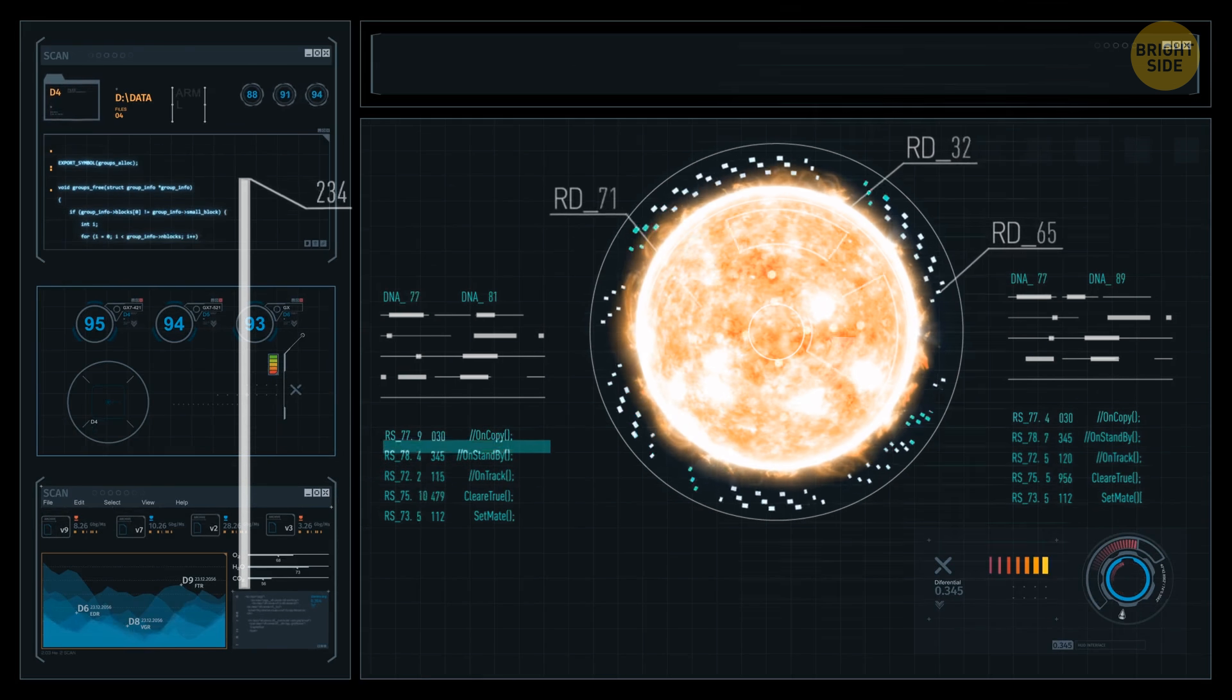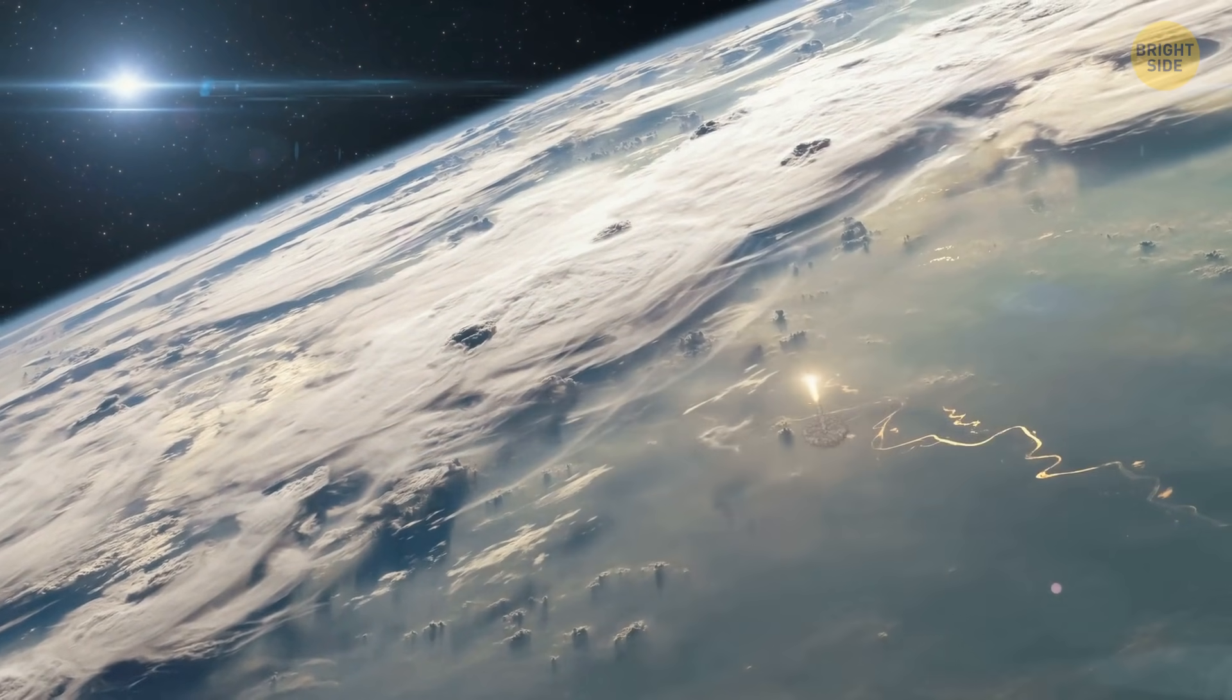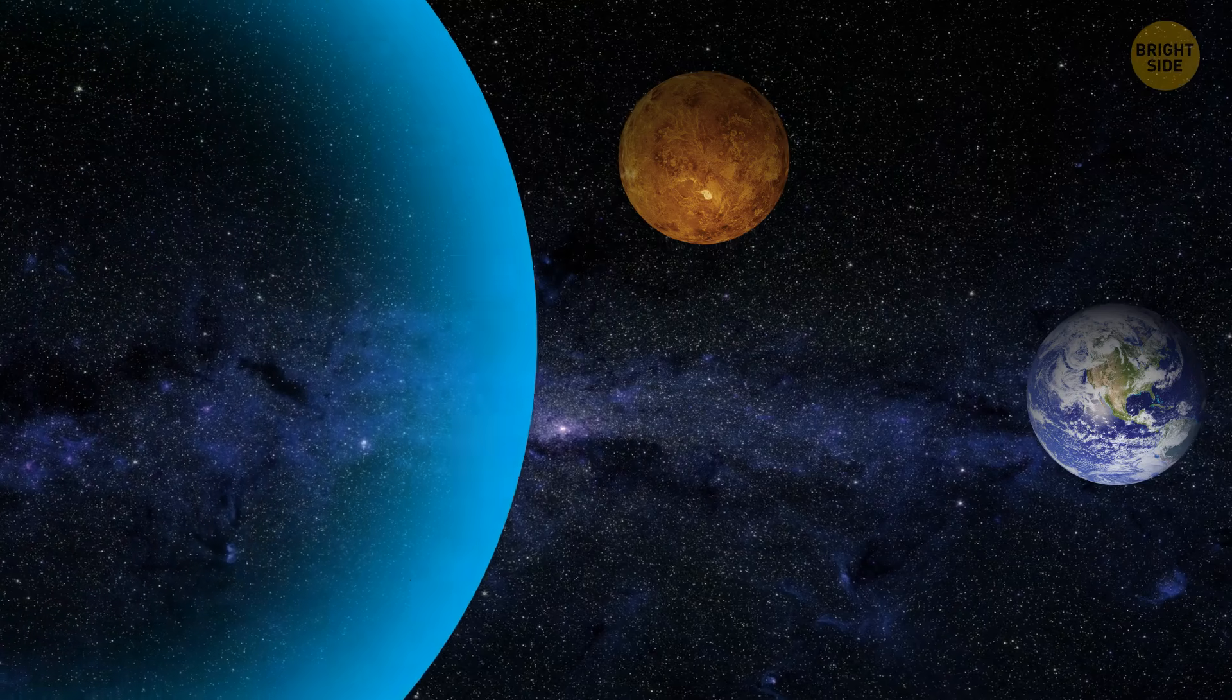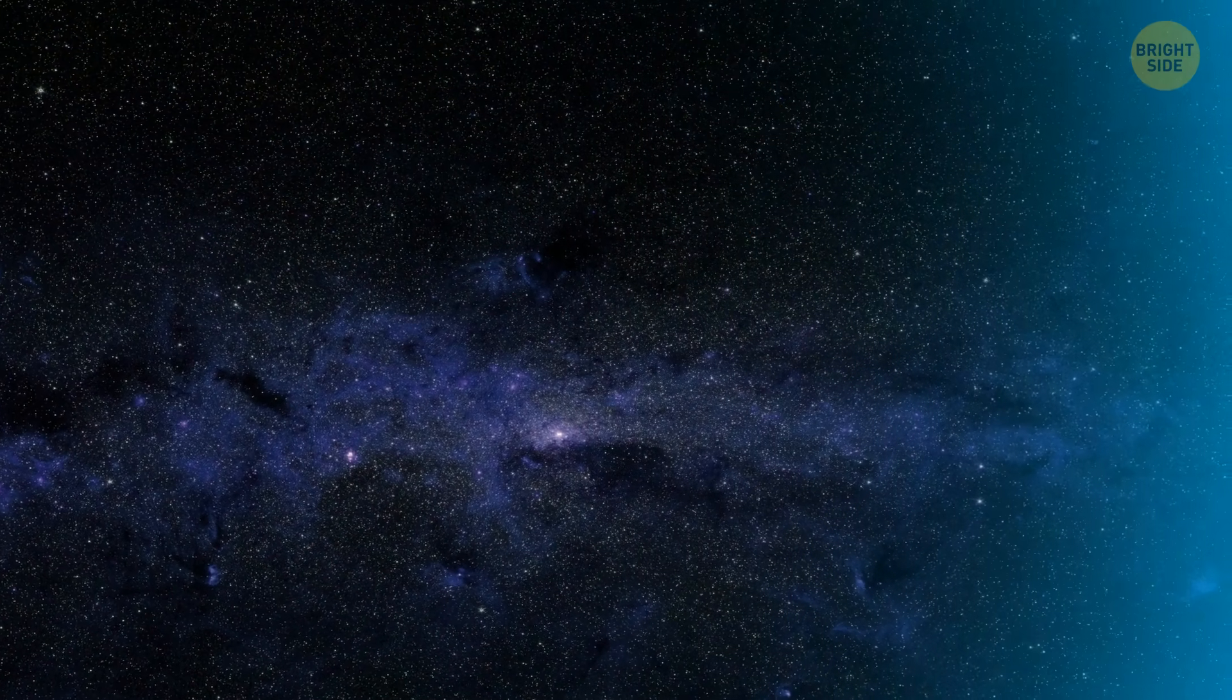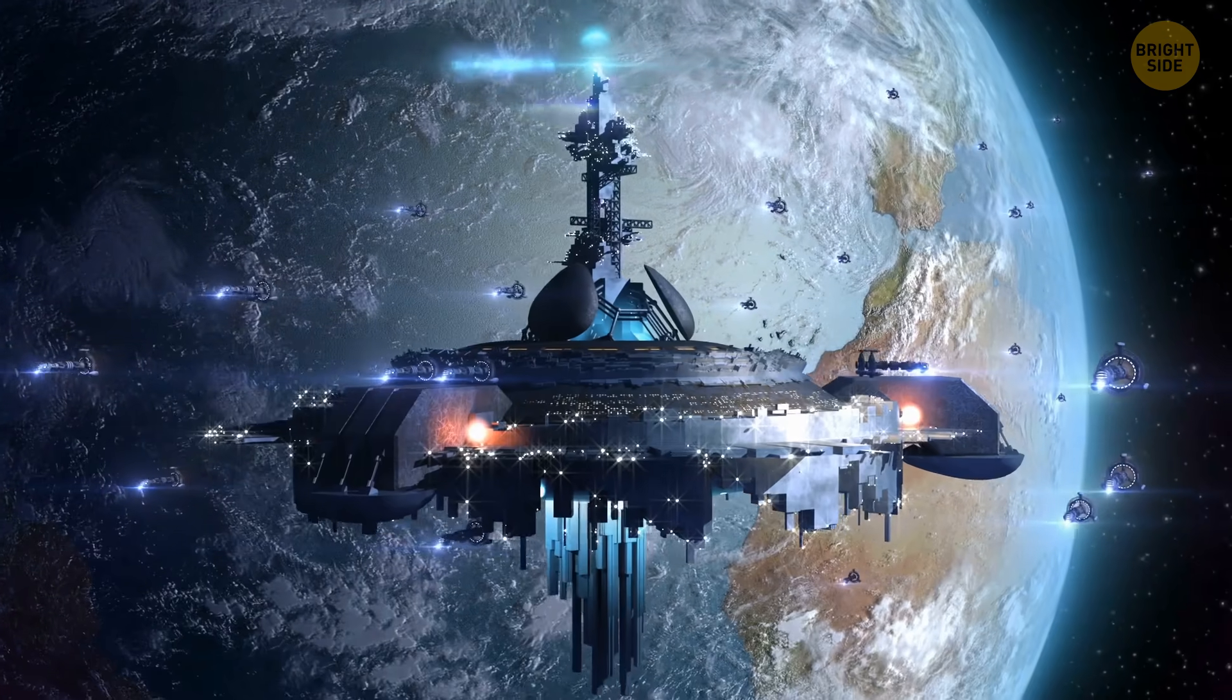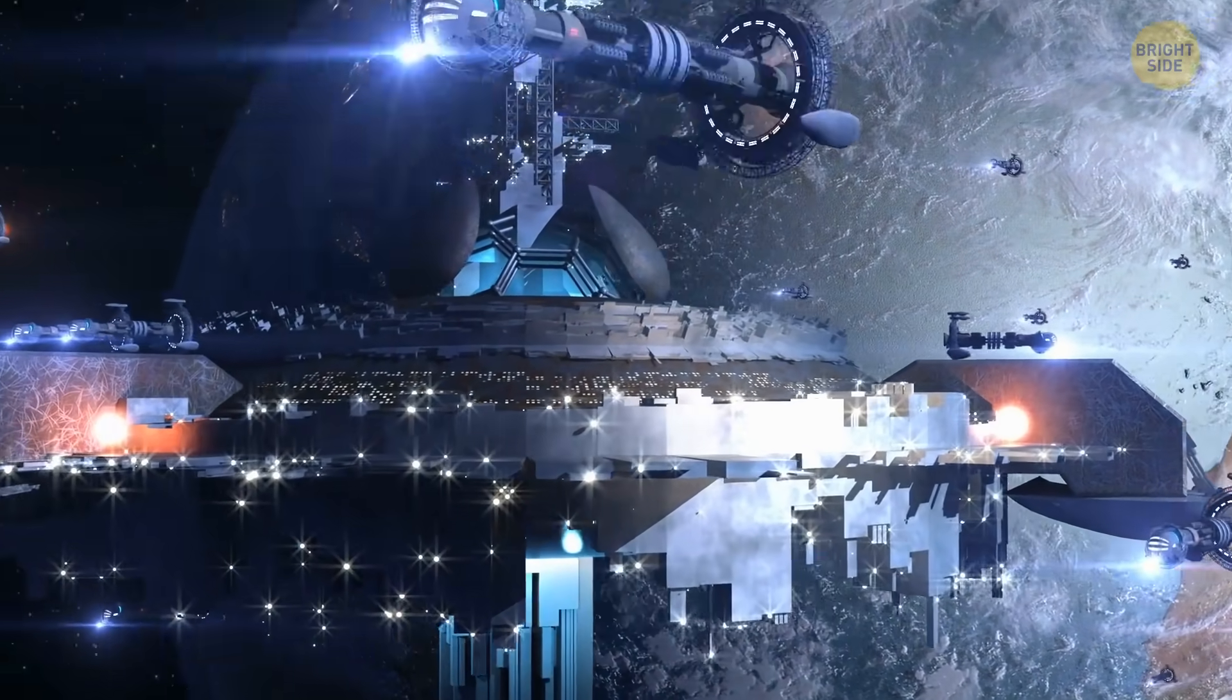So what could we do? Since Earth itself won't survive the sun's tantrum, we'd have to move somewhere. Remember how we mentioned that not all planets would be completely destroyed? Well, sadly, the ones closest to the sun, Mercury, Venus, and Earth, would disappear.